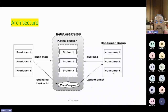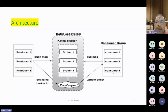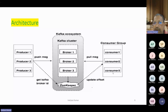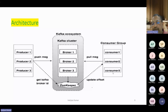With newer developments, Confluent is working to reduce ZooKeeper dependency and is coming with their own architecture called KRaft. They have not yet put it into production, but they are working on it and expect to release it by the end of this year or next year. Old applications will continue working on ZooKeeper; those who want to migrate to the new architecture can move to that.